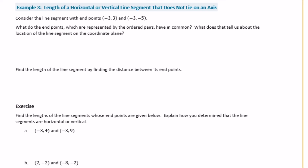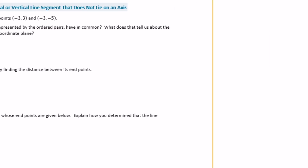Example 3: consider the line segment with endpoints negative 3, 3 and negative 3, negative 5. What do the endpoints have in common? Drawing it: negative 3, 3 is up here and negative 3, negative 5 is down here. You don't need to draw it, but it makes it easier to see. It's going to be vertical through the x-axis.